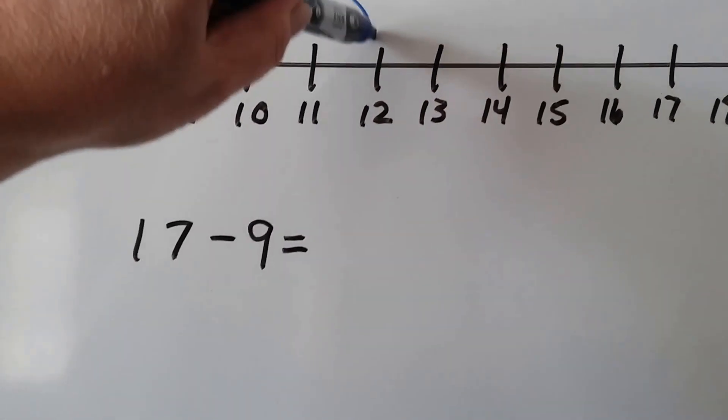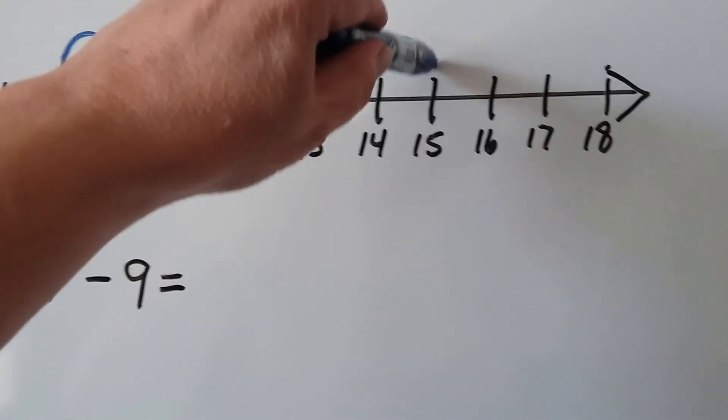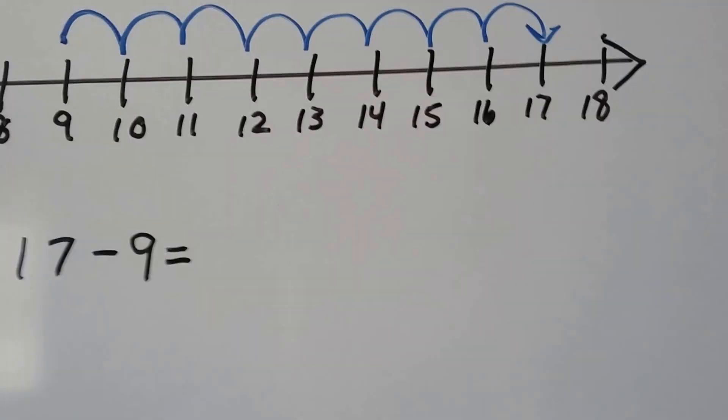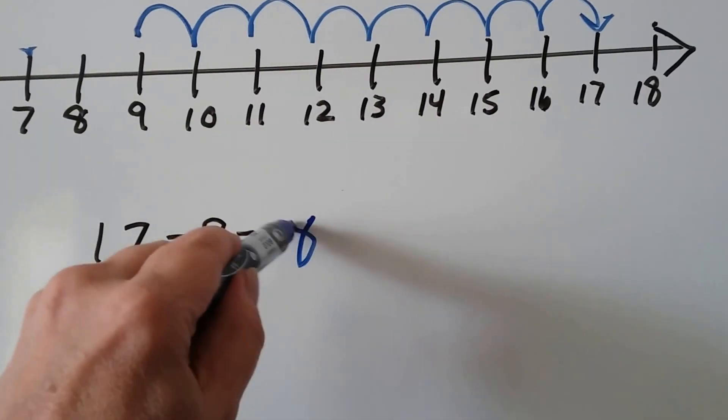1, 2, 3, 4, 5, 6, 7, 8. It was 8 hops, so 17 minus 9 is 8.